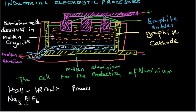This mixture of aluminum oxide dissolved in molten cryolite is electrolyzed. Electrolysis means we are decomposing aluminum oxide using an electrical current.